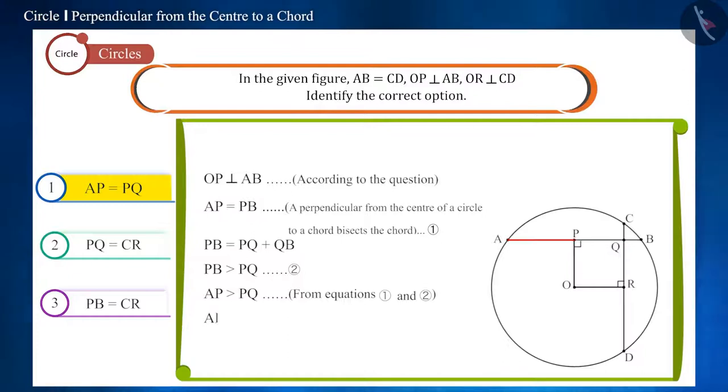And we saw that AP is equal to PB. So, AP cannot be equal to PQ. Therefore, this option is incorrect.